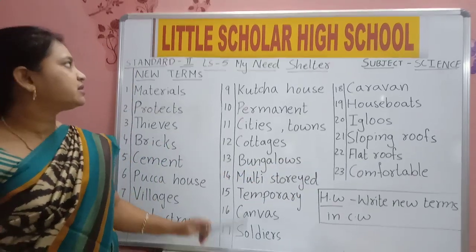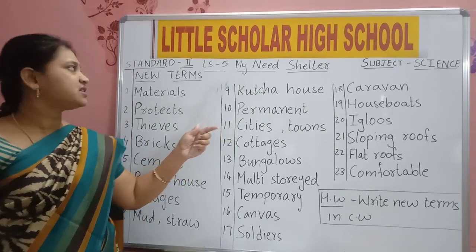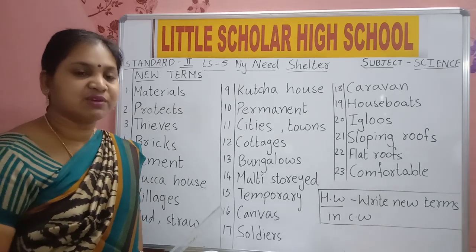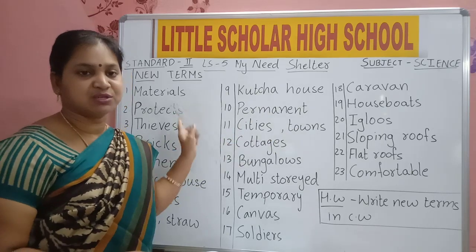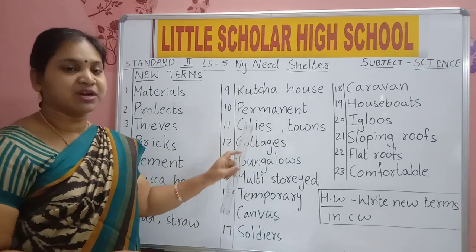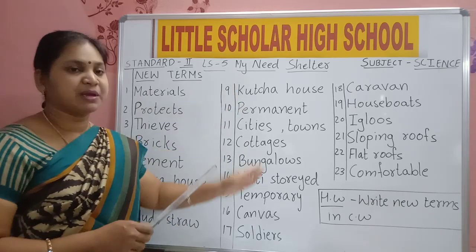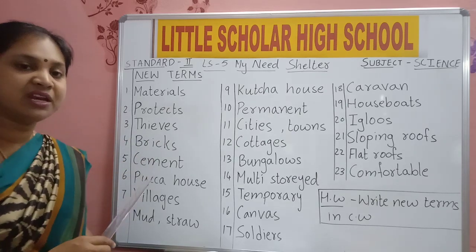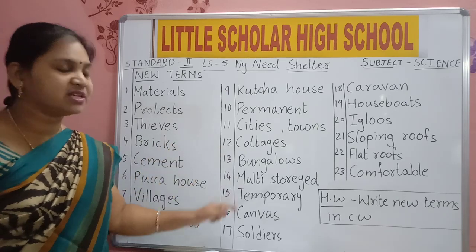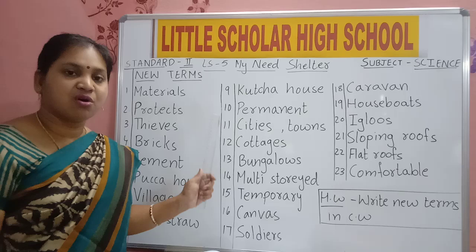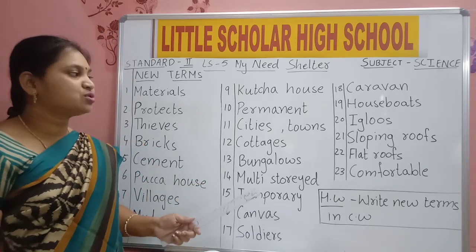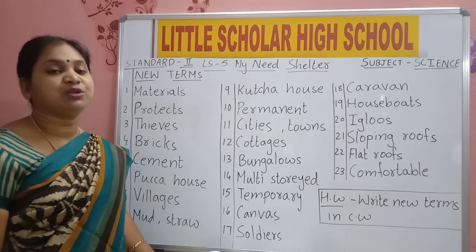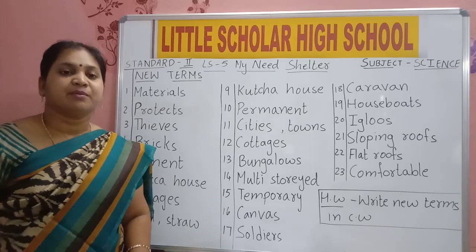Your homework: Write Lesson 5 — My Need Shelter — neatly in 4 lines, then write all new terms. Start each with a capital letter. Divide the paper into 2 equal parts, draw 2 lines in between, and put numbers. Write 2 terms per page. Write very neatly — spell and write each letter clearly so you can read all the words. Some more new terms will be done in the next class. Read and write your work neatly. Thank you, children.